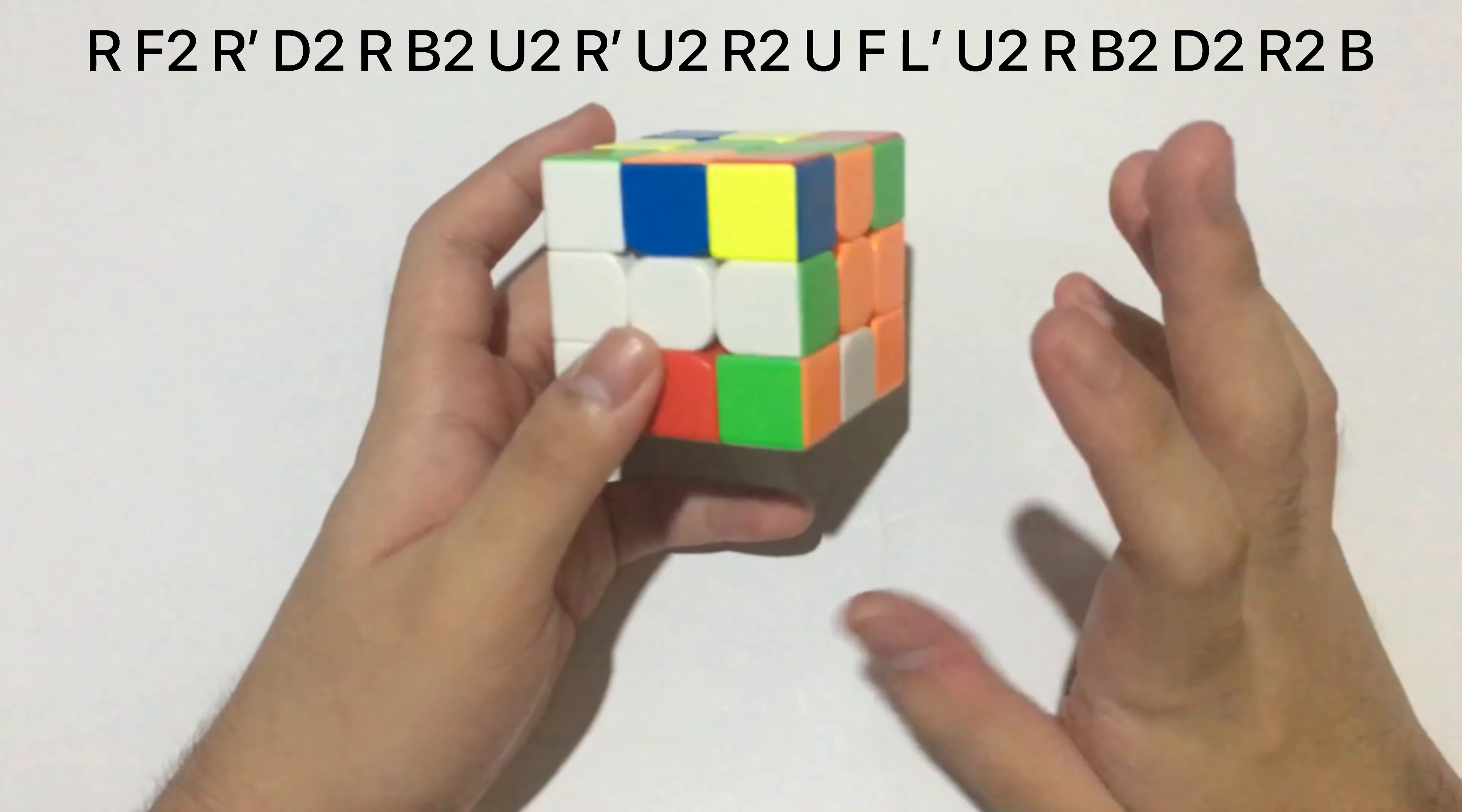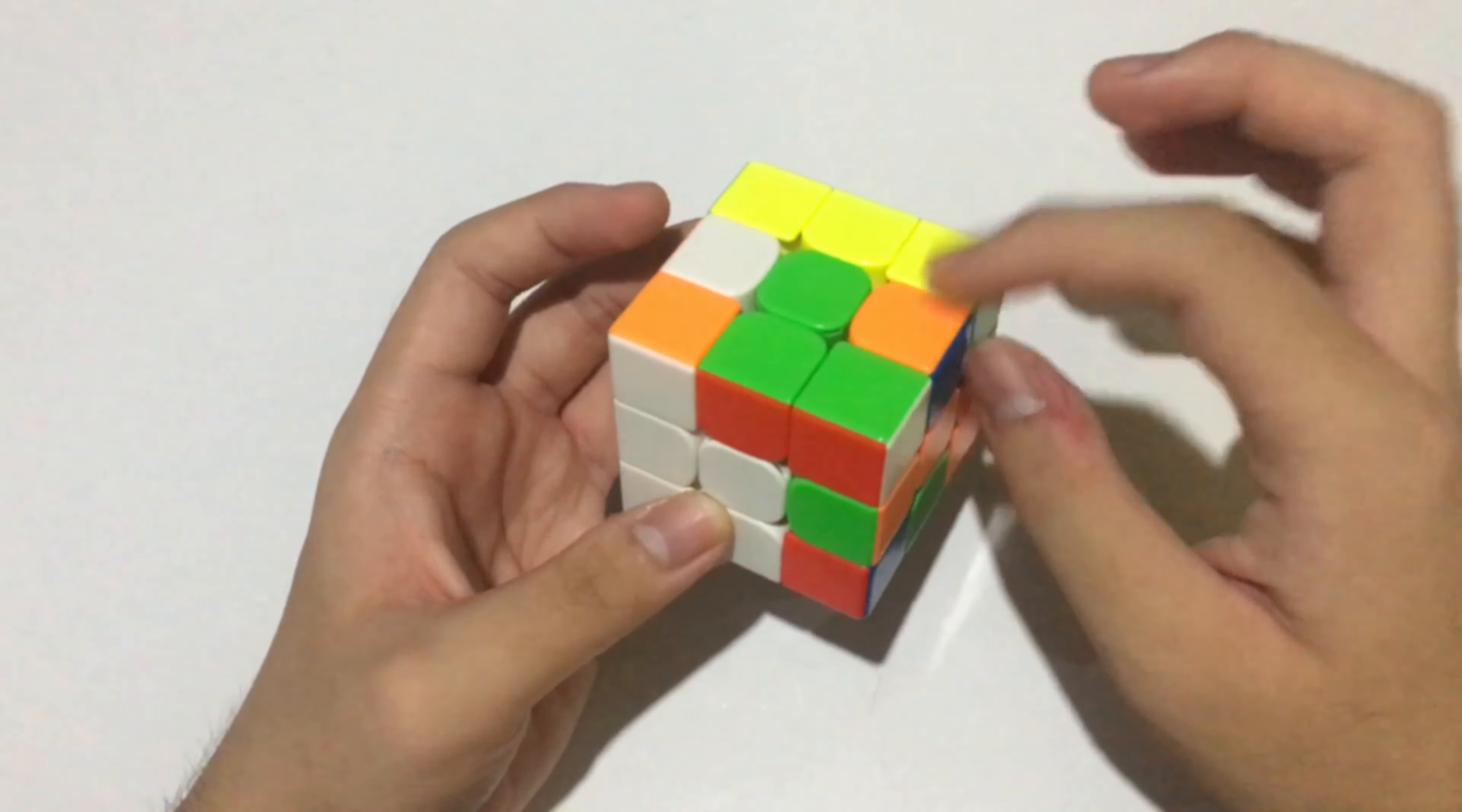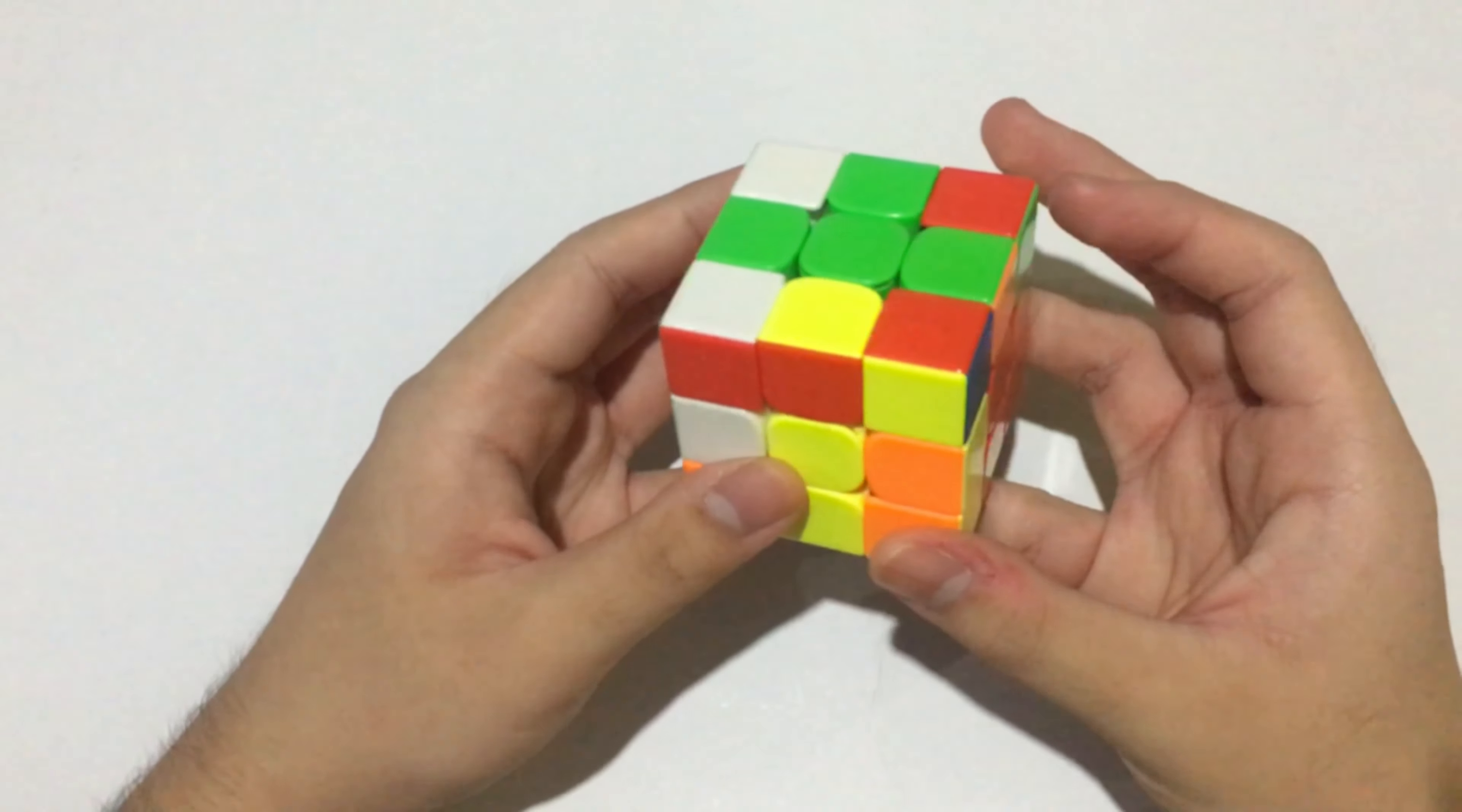This time I had a very inefficient X-cross. As we can see, we have this 2x2x1 block. What I did was move up this cross edge first, then inserted it like this. I moved this cross edge up, then inserted it like so, and my second pair was these two.